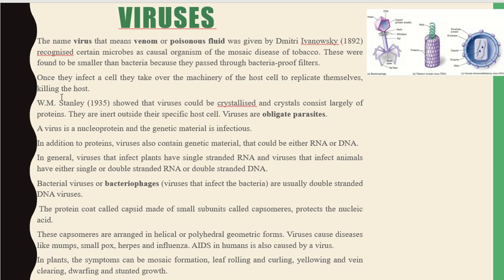Once a virus infects a cell, it takes over the entire machinery of the host cell to replicate itself, killing the host. A virus is a nucleoprotein, and its genetic material is infectious. In addition to protein, viruses also contain genetic material that could be either RNA or DNA. Viruses that infect plants generally have single-stranded RNA.